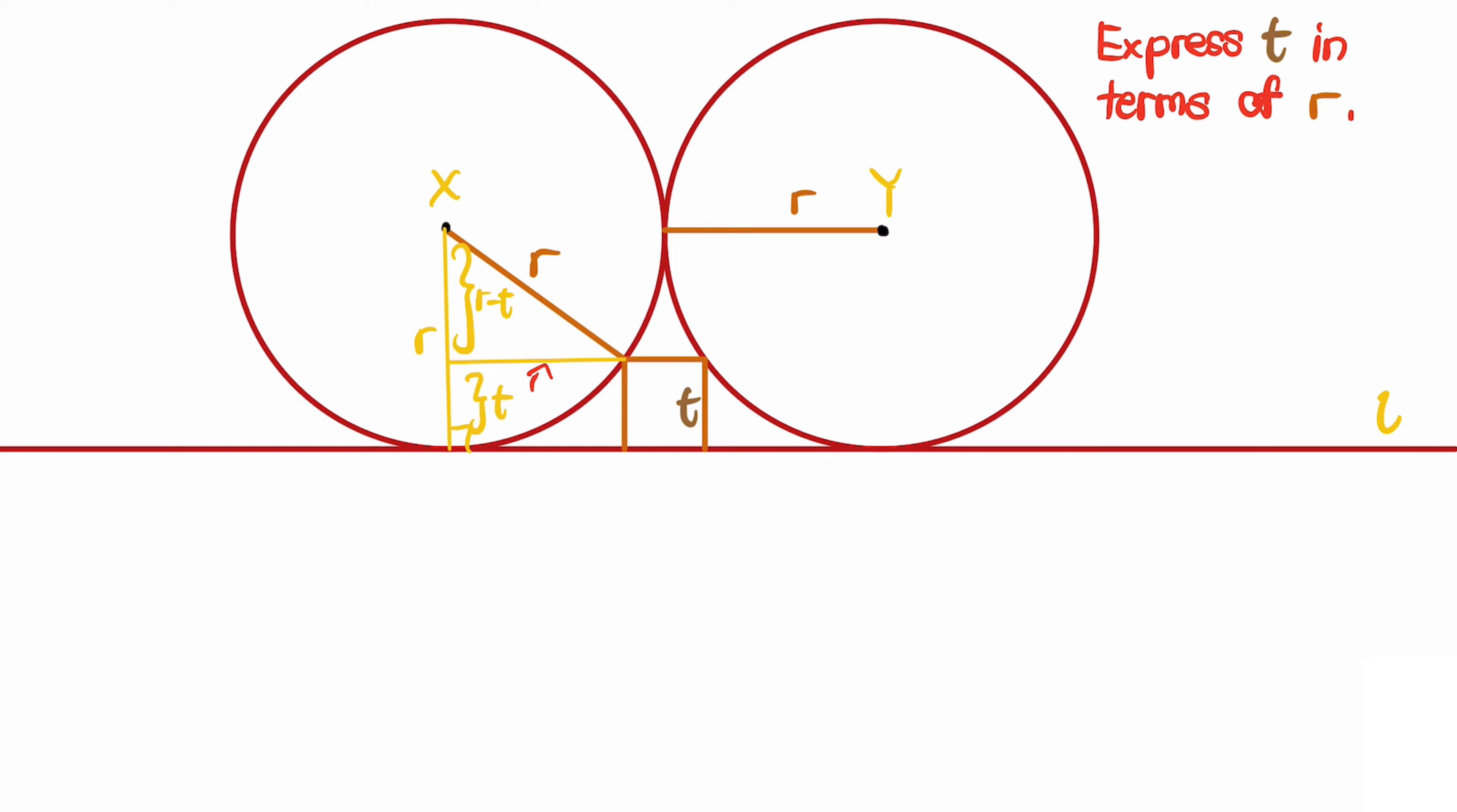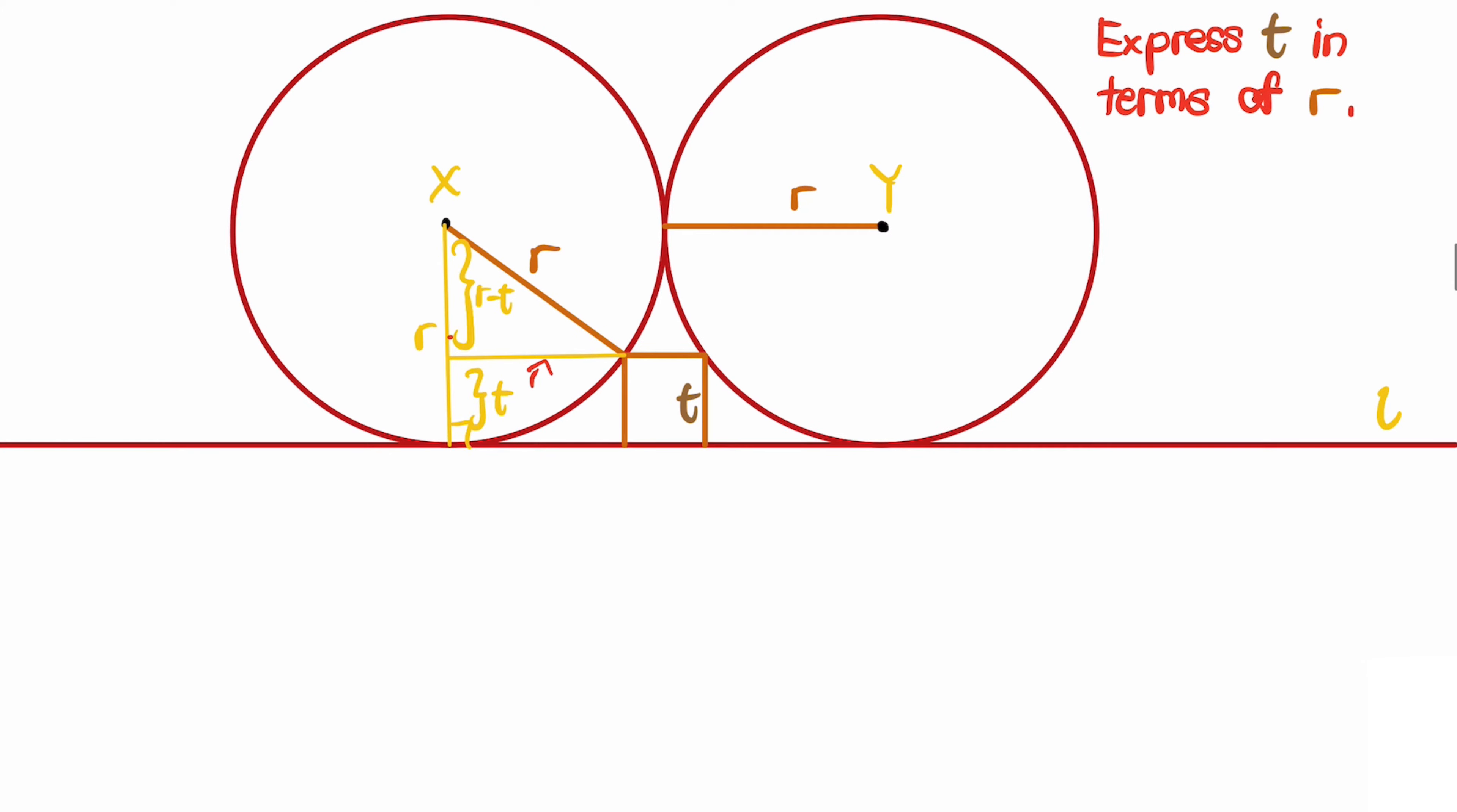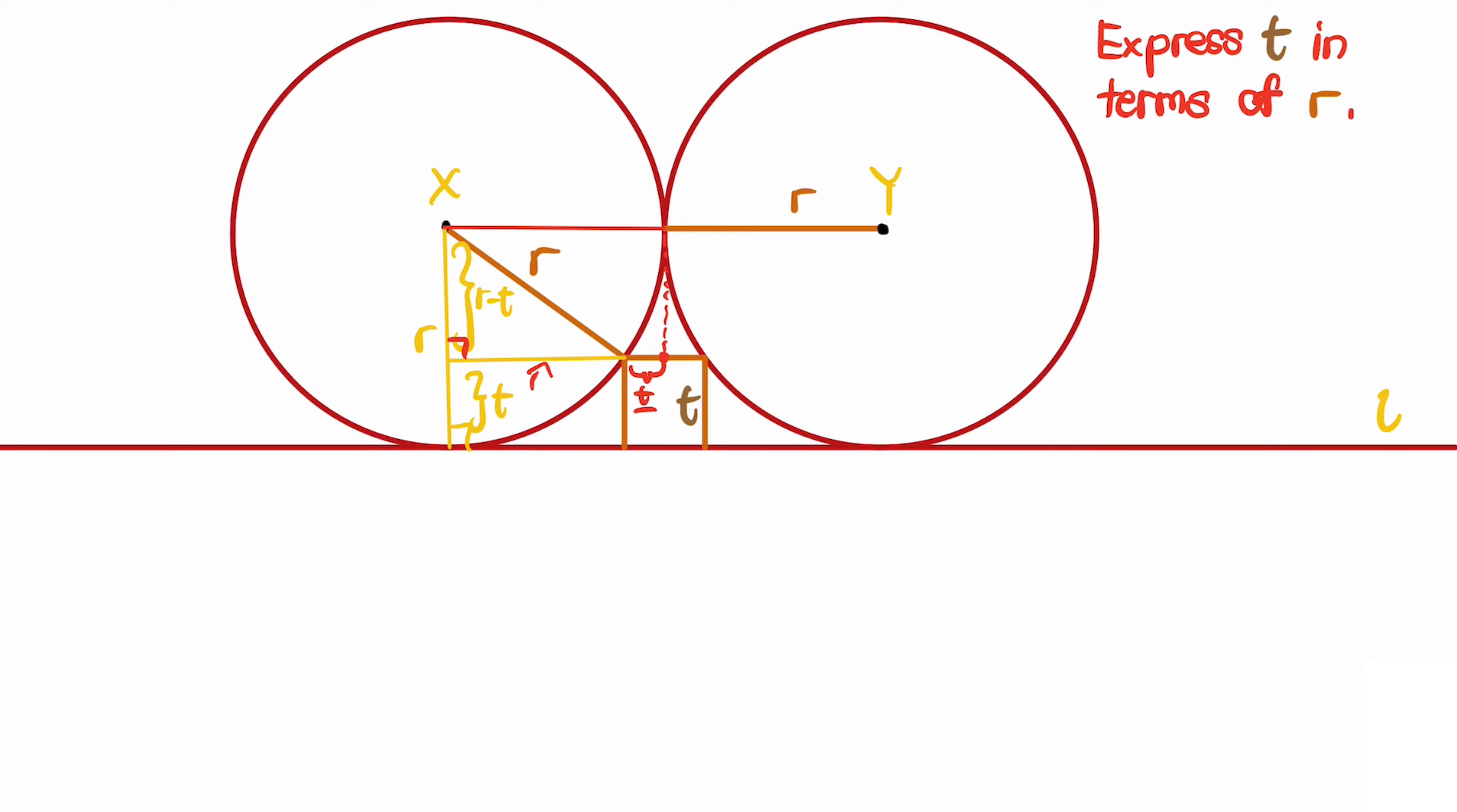Now our goal is to find this length so that we can have a right triangle. We can note that since these two circles are identical, the tangent line from the point of tangency must meet at the midpoint of the smaller square.